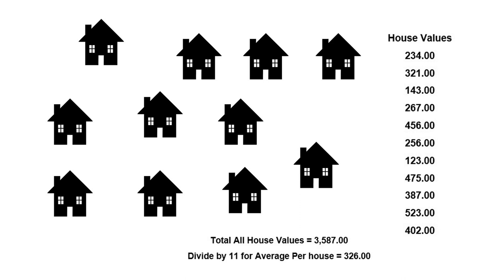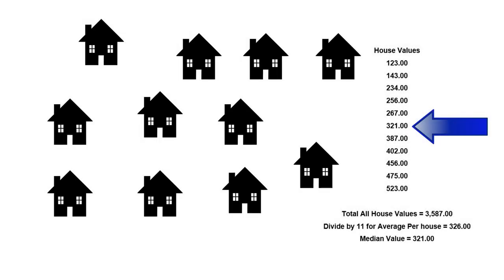To figure out the median price, we take the value of all the houses and put them in order from lowest to highest — or highest to lowest, it doesn't matter. Then we find the middle value. If it happens to be an even number, you just go in between the highest and lowest in the middle. In this case, the house worth $321 is our middle house value, so that is our median price.